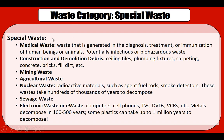The second category of waste is special waste. Within special waste, it can include medical waste, construction and demolition debris, mining waste, agricultural waste, nuclear waste, sewage waste, or electronic waste (e-waste). The reason these are special waste is because they contain an accumulated, concentrated amount of a specific type of waste. For example, medical waste contains body parts, blood, blood-soaked syringes, etc., which can be potentially infectious or biohazardous, so it must be properly treated.